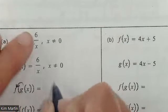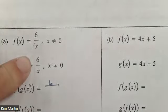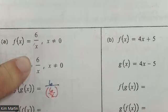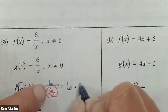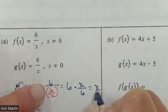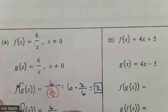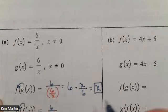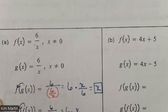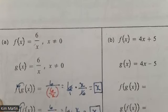For f(x) = 6/x and g(x) = 6/x: f(g(x)) = 6 ÷ (6/x) = 6 × (x/6) = x. Then g(f(x)) = 6 ÷ (6/x) = 6 × (x/6) = x. Both end up as x, so yes, they are inverses.